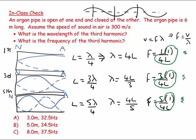Whereas for the guitar string, it was simply a ratio of one to two to three — so we had first, second, third, fourth, fifth, sixth harmonic. For the organ pipe open at both ends, we also get first, second, third, fourth, fifth, sixth. But for the organ pipe that's open only at one end and closed at the other, we get first, third, fifth, seventh — we get no even harmonics. So a little bit of a tutorial on where that comes from; it should be covered in class.